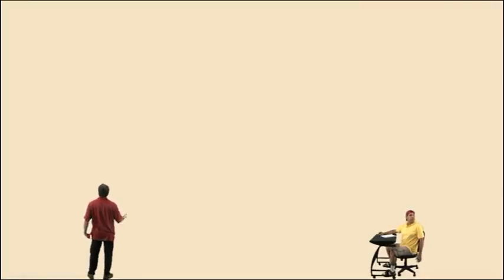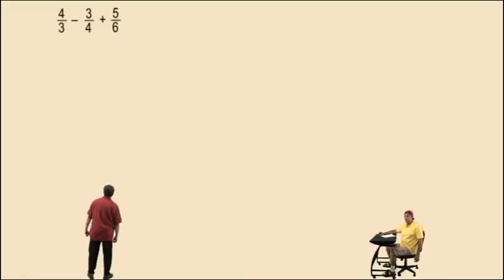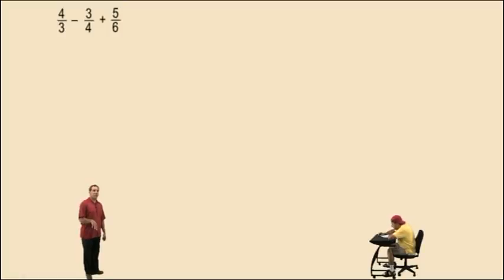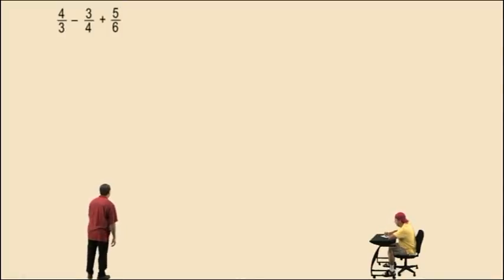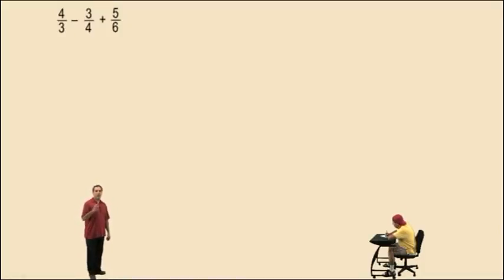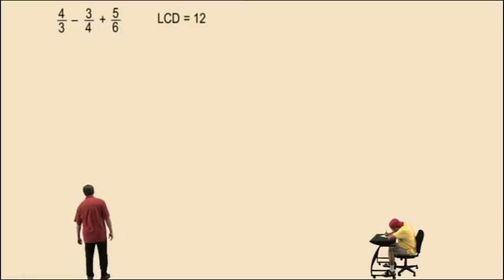Right here: 4 thirds subtract 3 fourths plus 5 sixths. Notice we have addition and subtraction with fractions, therefore we need to have a lowest common denominator. Now we have a 3, a 4, and a 6. The smallest number that 3, 4, and 6 divide evenly into is 12, so that's our lowest common denominator.